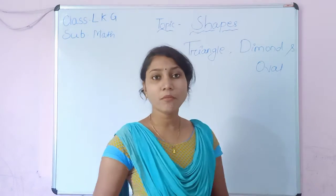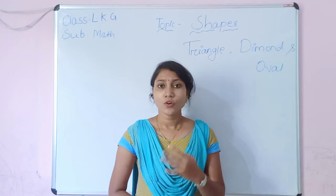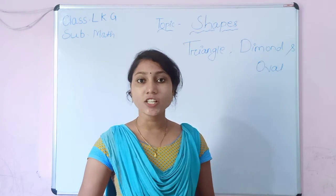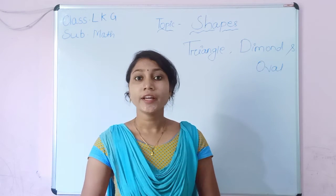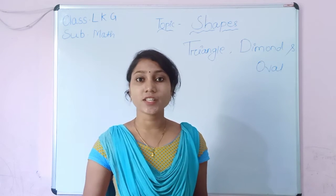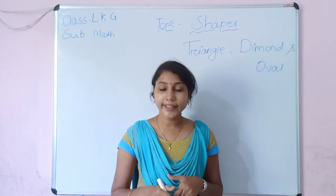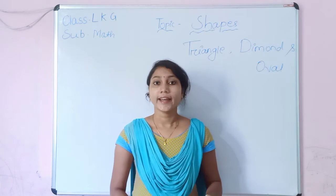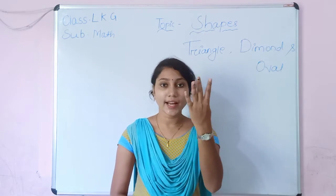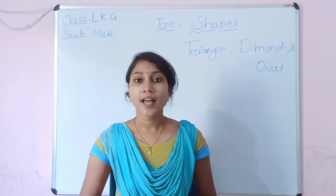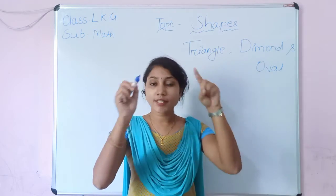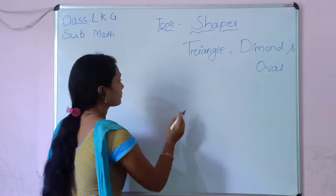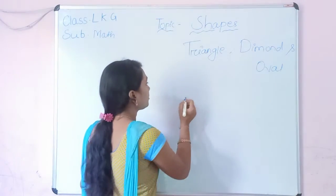A diamond has four equal sides. It looks like a slanty square.